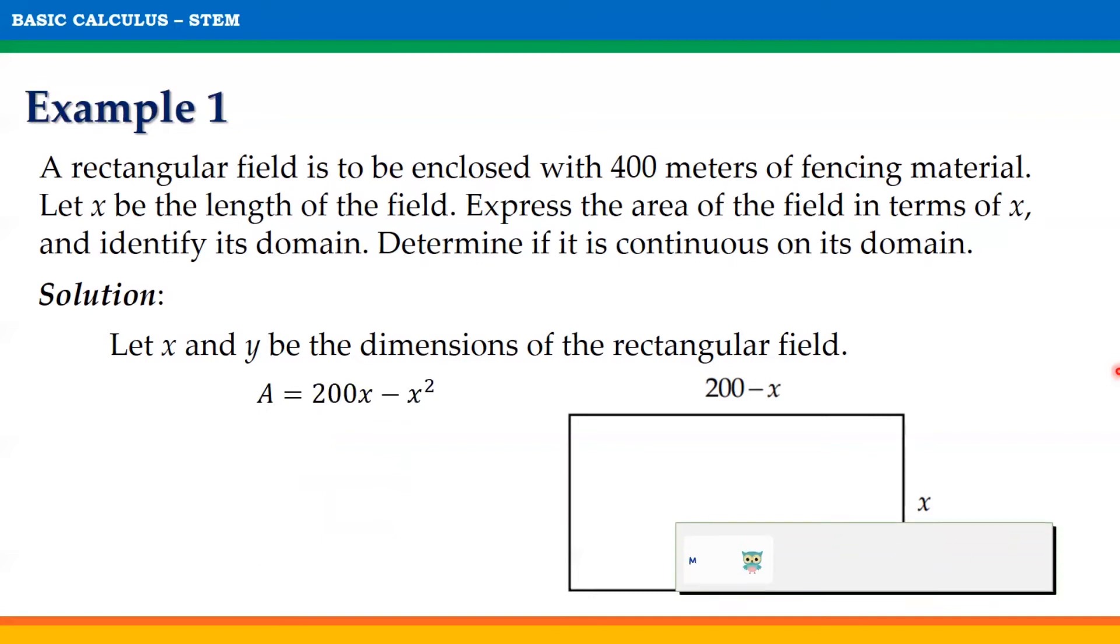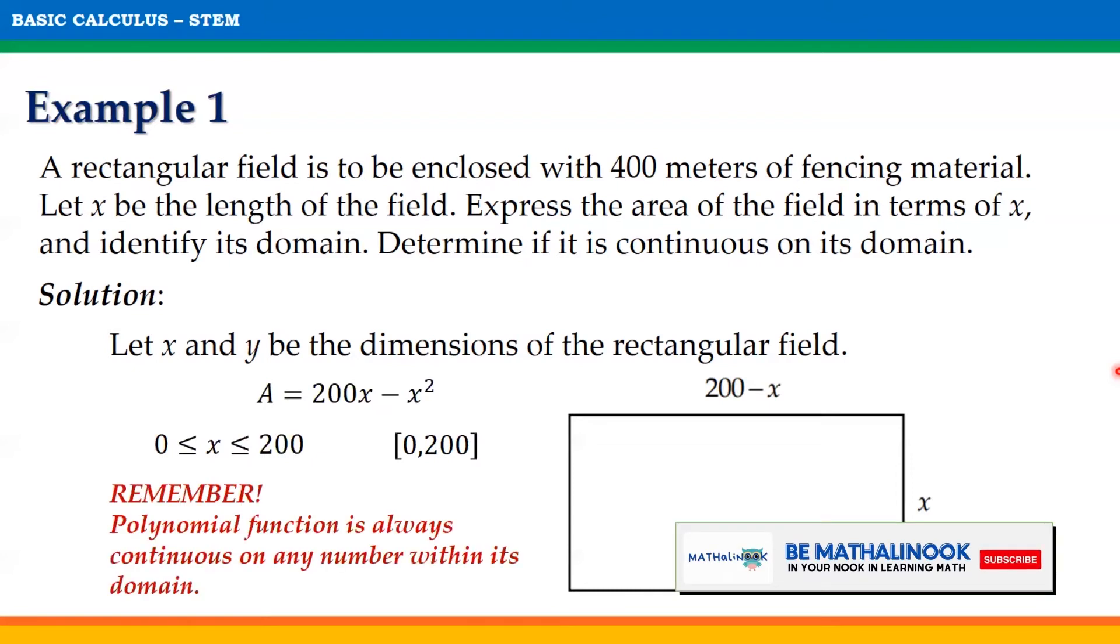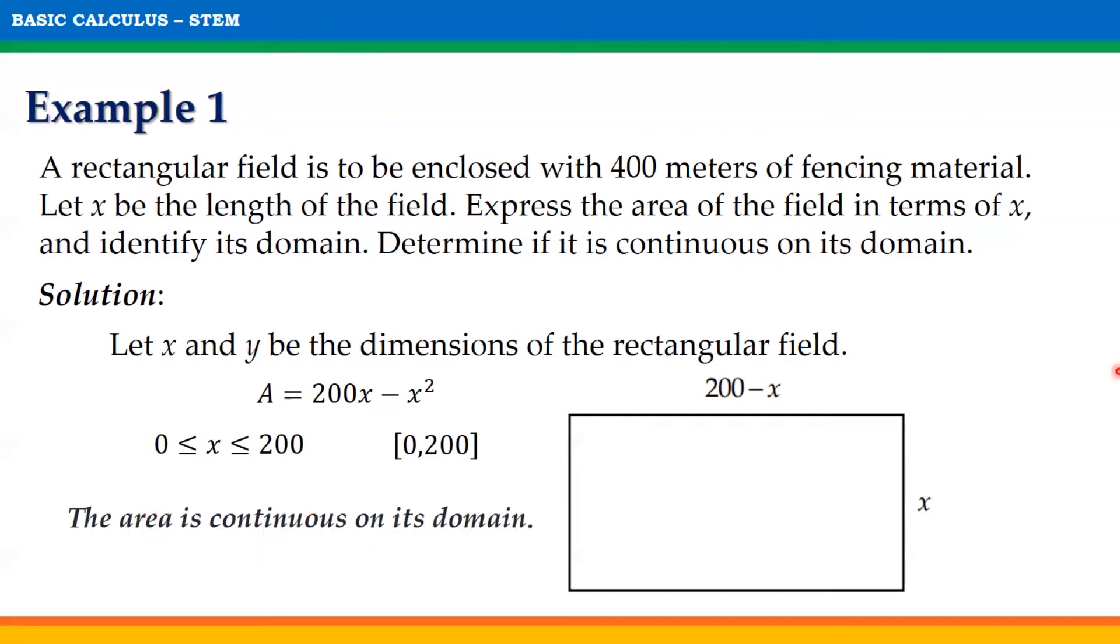Since the area is represented by a polynomial function with the domain of the interval [0,200], remember that the polynomial function is always continuous on any number within its domain. Thus, the area is continuous on its domain [0,200].